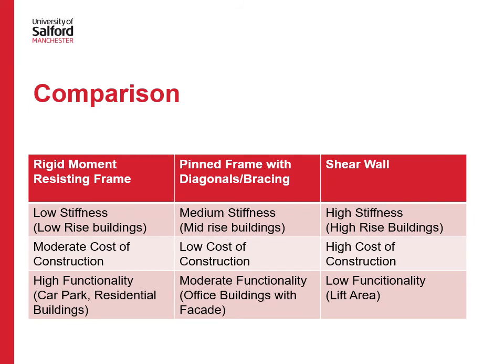Now let us compare the various stability systems. First, stiffness: if you require high stiffness, shear wall is the best option. Second, cost: if cost is the major concern, a pinned frame with bracing is best, as it provides good stability with less material. Third, functionality: if functionality is the priority — for example in a car park where free flow of traffic is needed — rigid frames are the best option, since bracings or shear walls cannot be used.